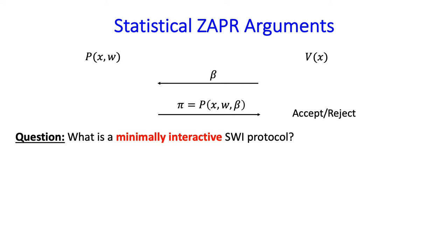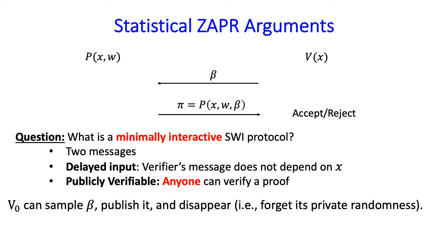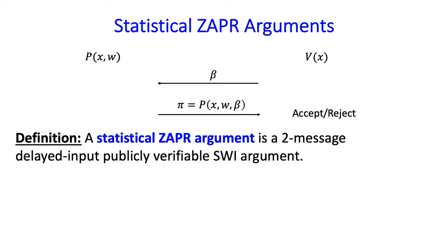The problem we're really trying to solve is minimizing interaction between a prover and a verifier. What you could hope for: first, a two-message protocol; second, the verifier message is a random string which doesn't depend on the statement; and furthermore, the proof is publicly verifiable, meaning the verifier doesn't need to remember how it sampled this random string. In such a setting, some initial verifier samples a first message beta, publishes it, and forgets everything. Any prover can then convince any verifier of multiple arbitrary statements, giving nice reusability properties. We define a statistical zapper argument to be a two-message protocol satisfying all these properties: delayed input, publicly verifiable, statistically WI argument system.